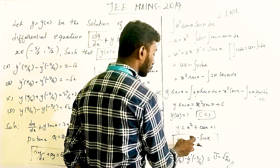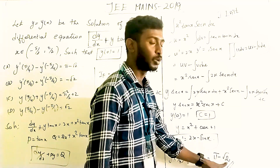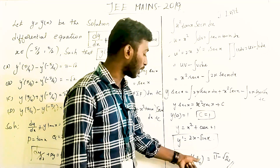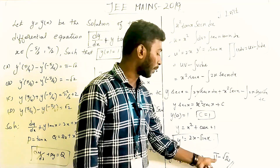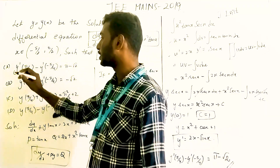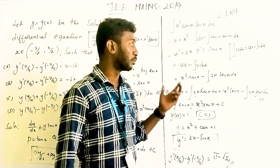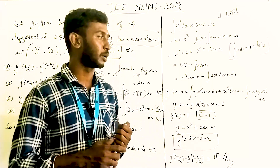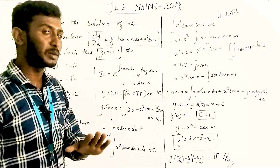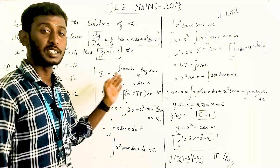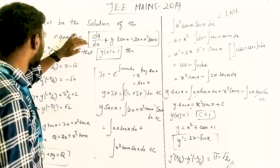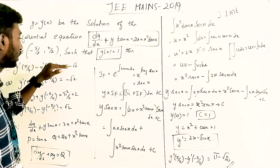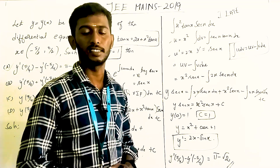Checking the options, option A is the correct answer. This is a very important and lengthy question. If we know integration by parts, we can solve differential equations like this easily. The answer is option A: y(π/4) − y(−π/4) = 5/√2 − (π²/4)·√2. Thank you!